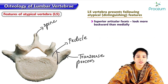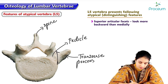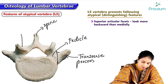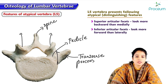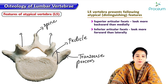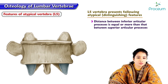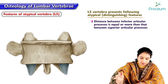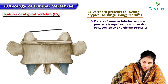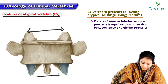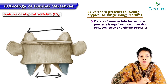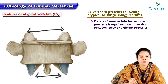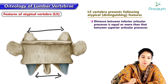The superior articulating facets of L5 look more backwards than medially, and the inferior articulating facets look more forward than laterally, compared to the typical lumbar vertebra. In L5, the distance between the inferior articulating processes is equal to or more than the distance between the superior articulating processes — the reverse of typical lumbar vertebrae.